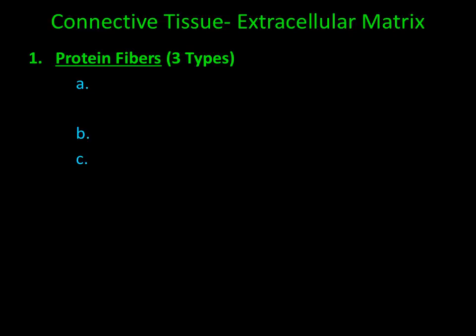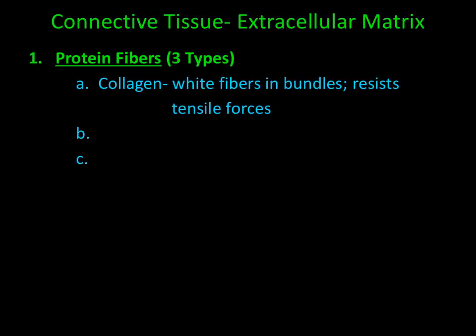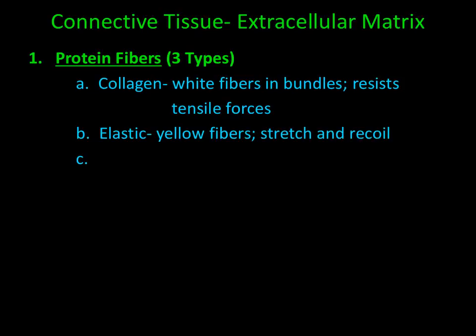The first type of protein fiber is called collagen. Collagen are white fibers found in bundles, and because they're in bundles, they resist tensile forces or stretching forces. The second type of protein fiber is elastic fiber — elastic fibers are yellow and have the ability to stretch and recoil. The last type of protein fiber are reticular fibers, which help anchor structures within the connective tissue.